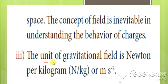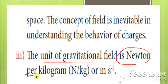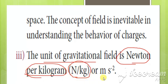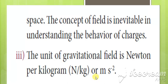The last point: the unit of gravitational field intensity is Newton per kilogram, written as N/kg, which is equivalent to m·s⁻².